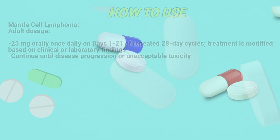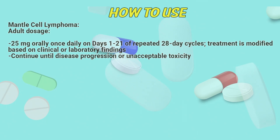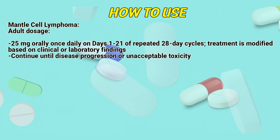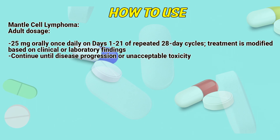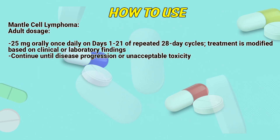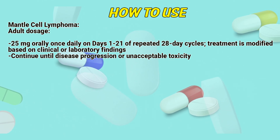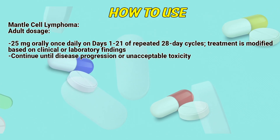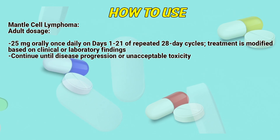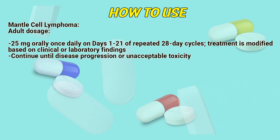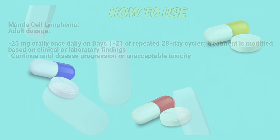Mantle cell lymphoma, adult dosage: 25 mg orally once daily on days 1–21 of repeated 28-day cycles. Treatment is modified based on clinical or laboratory findings. Continue until disease progression or unacceptable toxicity.